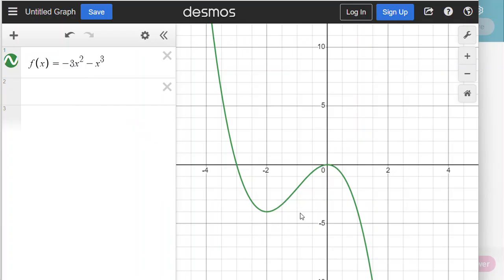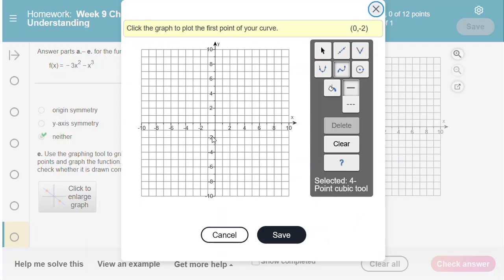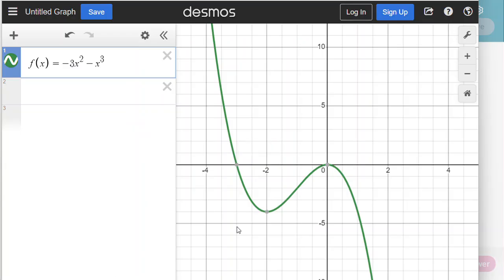I'm going to start by plotting this point here at negative 3, 0. I'm going to click it down. Now I'm going to go back to my graph. This is another point that I can plot at negative 2, negative 4 and that's the bottom of this turning part of the graph here.